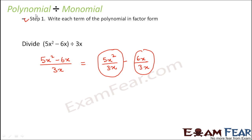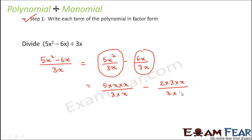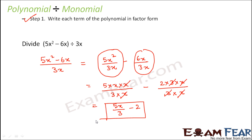We write each term in factor form: 5x² = 5 × x × x over 3 × x, and 6x = 2 × 3 × x over 3 × x. In the first term, x cancels with x; in the second, 3 cancels with 3 and x cancels with x. So we are left with 5x/3 − 2. That is the result of this division — common factors cancel during division.